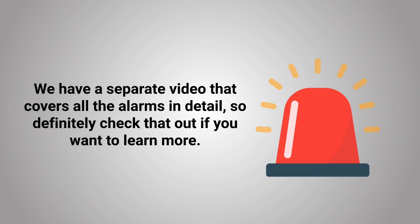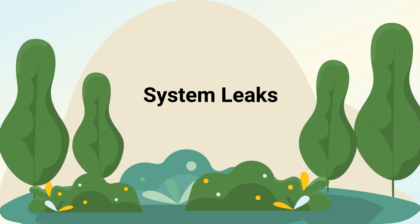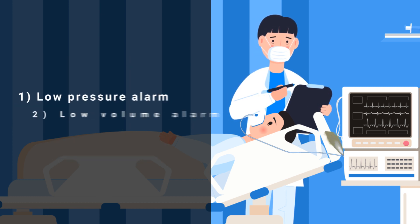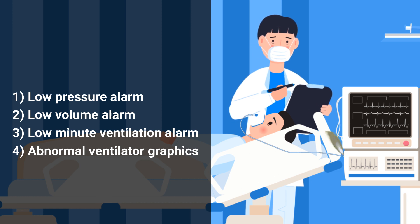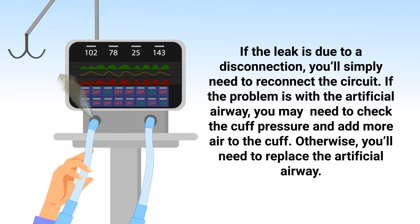We have a separate video that covers all the alarms in detail, so check that out if you want to learn more. Another common problem during mechanical ventilation is system leaks. A system leak occurs when there is a disconnection, a problem with the circuit, or a problem with the artificial airway. Signs of a leak include the sounding of the low pressure alarm, low volume alarm, or low minute ventilation alarm, or abnormal ventilator graphics. If the leak is due to a disconnection, you'll simply need to reconnect the circuit. If the problem is with the artificial airway, you may need to check the cuff pressure and add more air to the cuff.